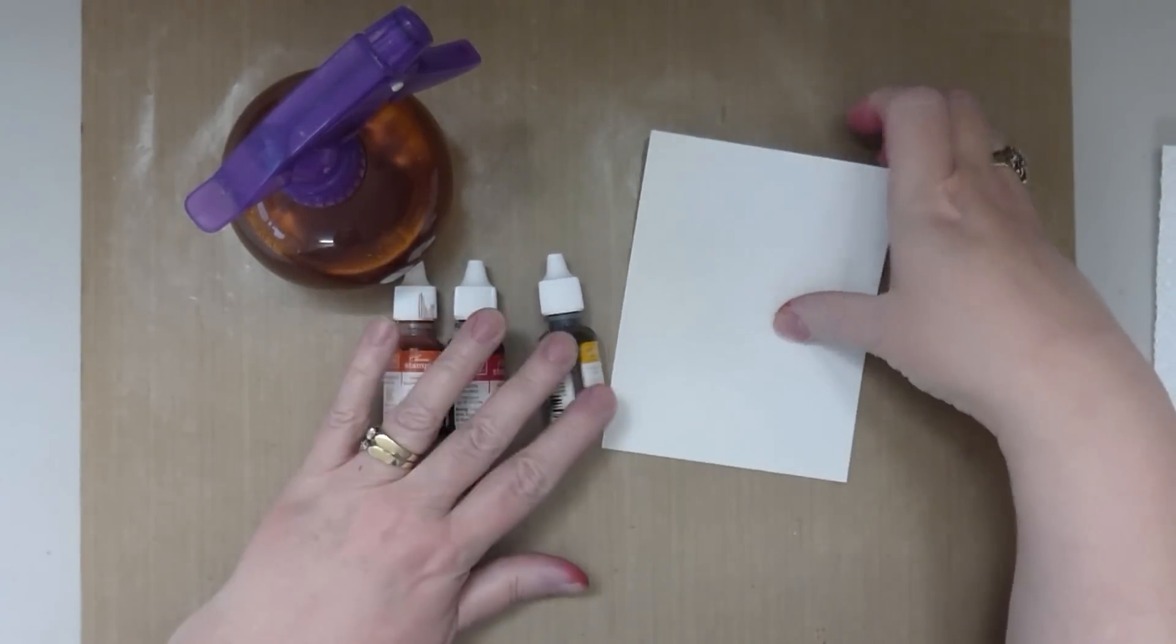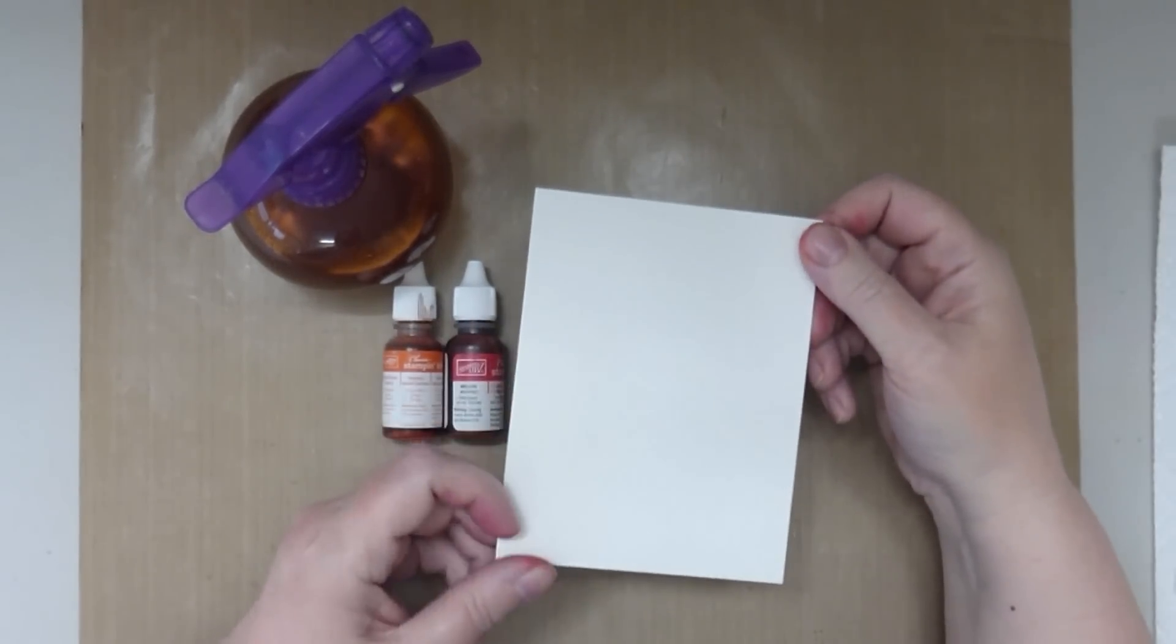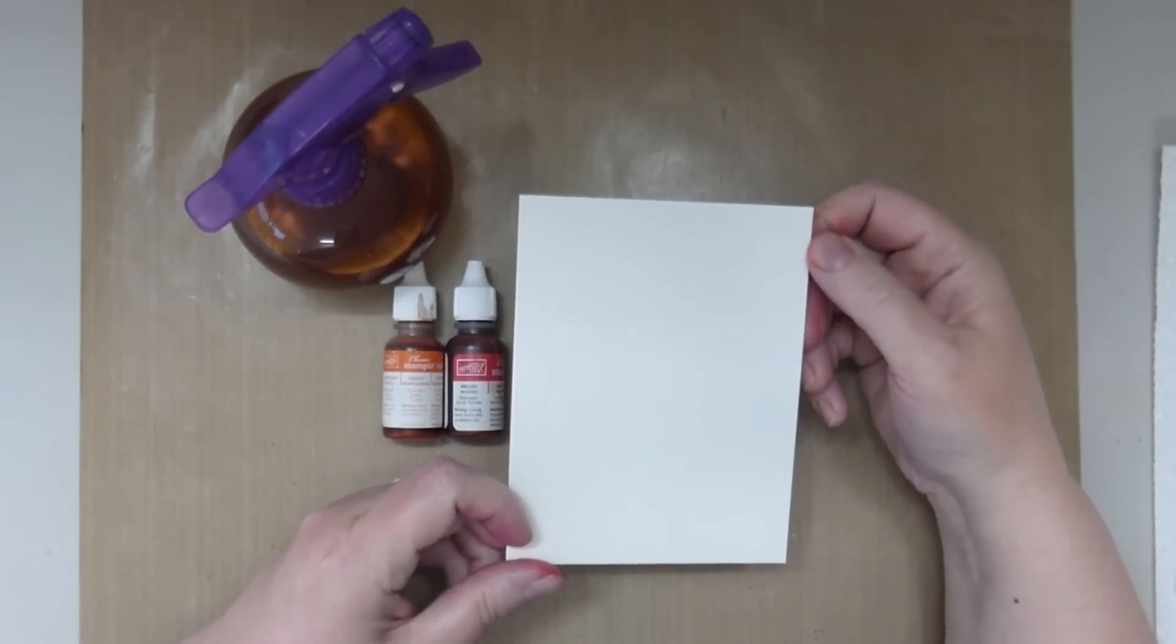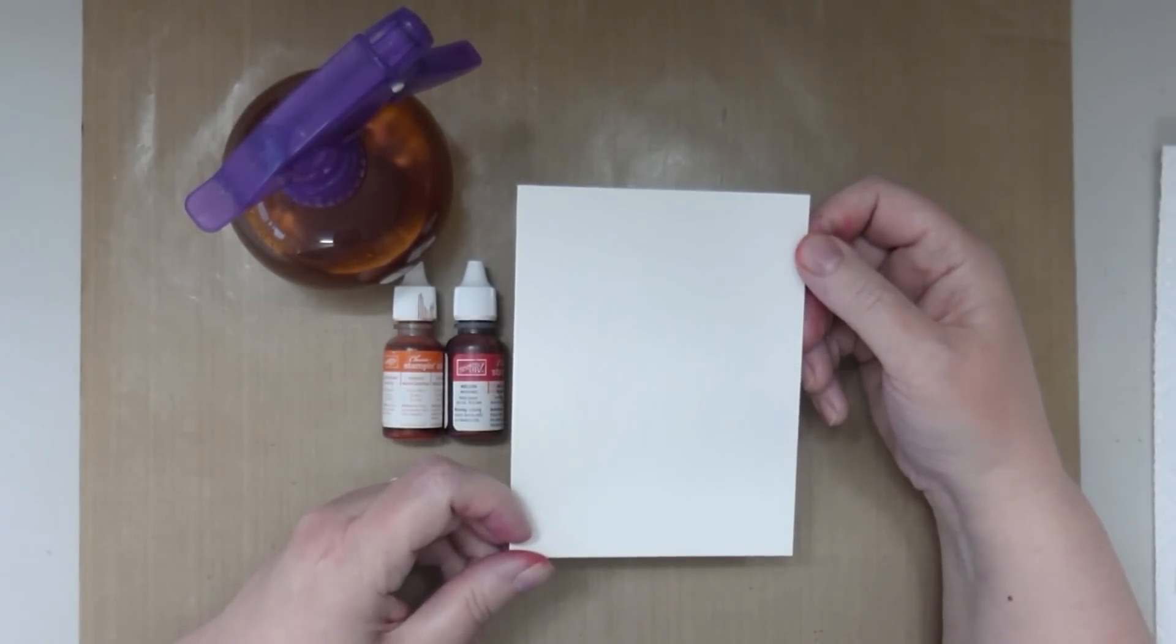Let's get started. First of all, I use Arches 140 lb cold-pressed watercolor paper. It's my favorite. It's very thick, good quality, but for this technique I think you could probably use any kind of watercolor paper. It would work well.